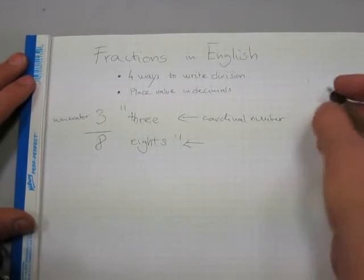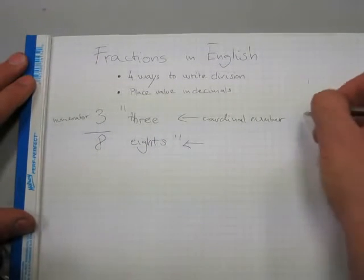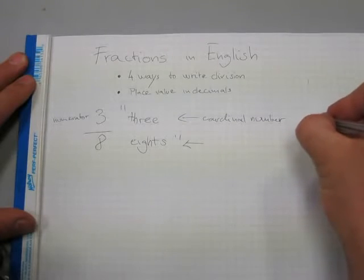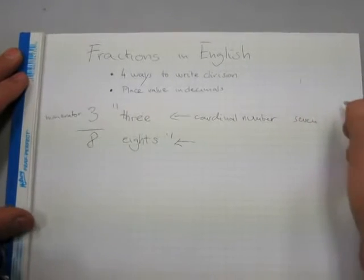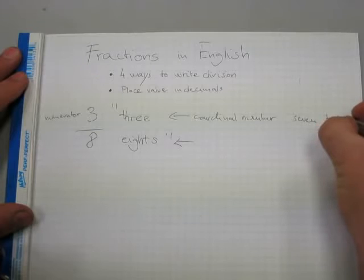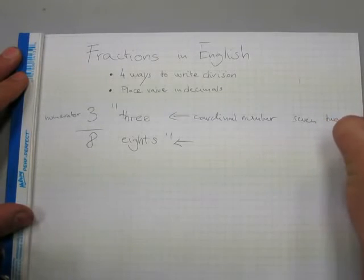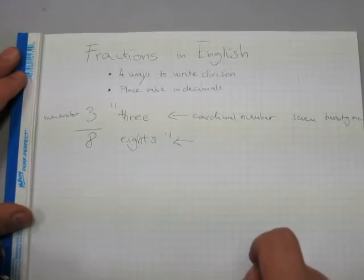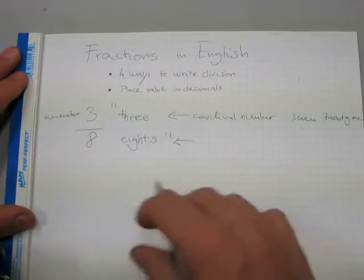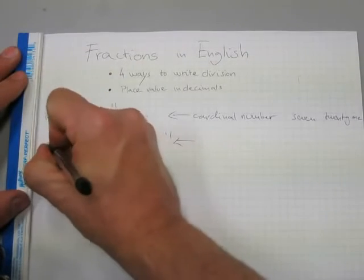Because other cardinal numbers, other examples for cardinal numbers would be 7 or 21, 27 or 21. On the bottom here for the denominator,